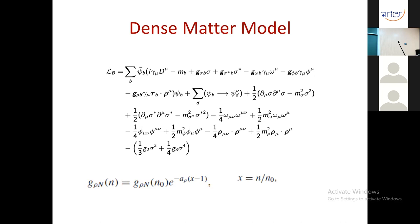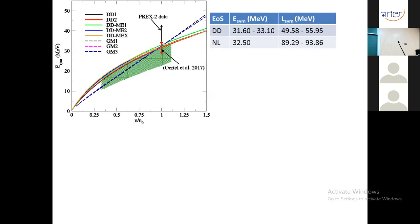After tuning the g-rho-N coupling parameters to reproduce the experimentally obtained symmetry energy e-sim, the parameterizations are examined against recent astrophysical data from neutron star observations. The existing equations of state are compared with obtained values of nuclear symmetry energy e-sim. The green shaded region indicates the variation of e-sim at sub-nuclear density from heavy-ion collision data, and the red line shows the existing range of e-sim at nuclear saturation density.